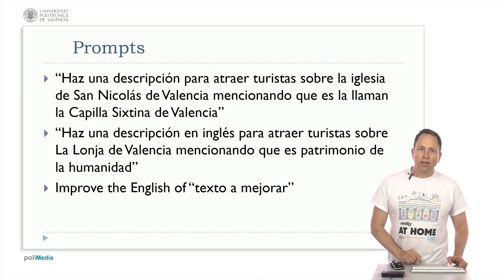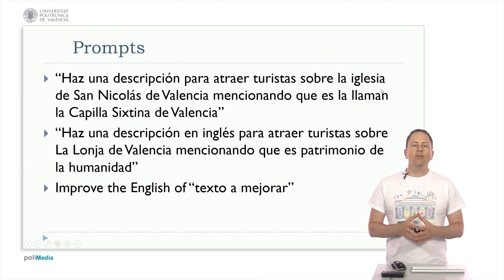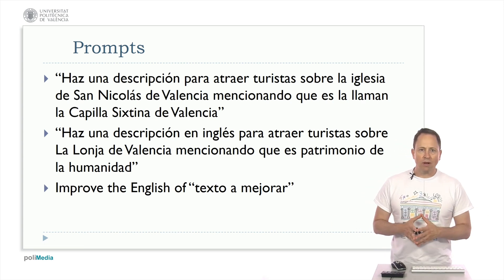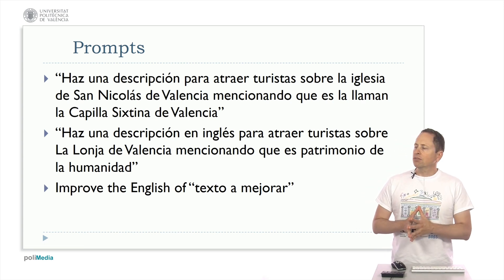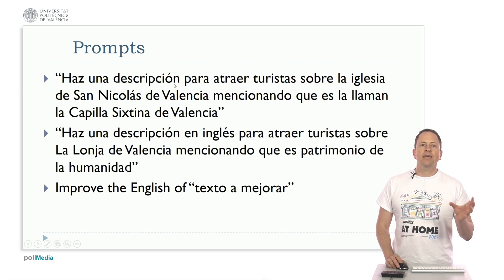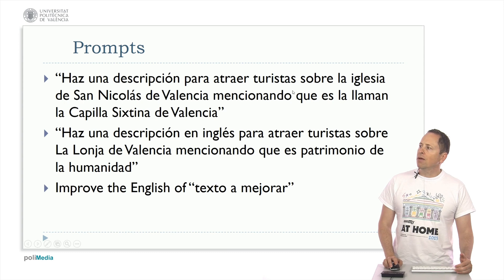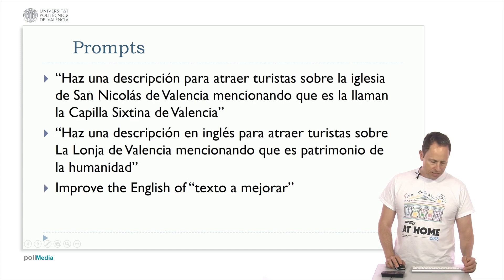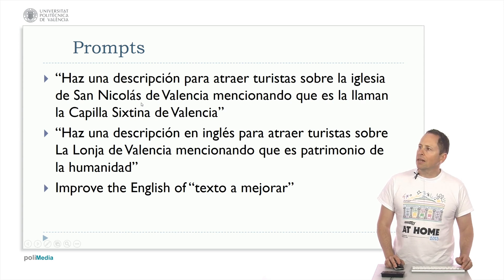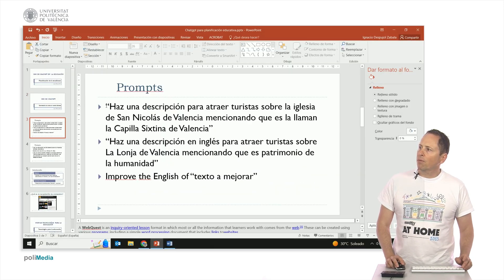Here are some ideas. For example, we are making a tourist web page about Valencia and we want to make descriptions of several attractions. So we could tell ChatGPT to make a description to attract tourists about the Church of San Nicolas of Valencia, mentioning that they call it the Sistine Chapel of Valencia. I'm going to exit the PowerPoint.